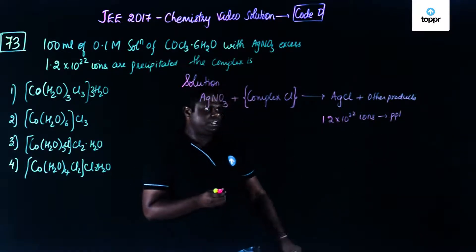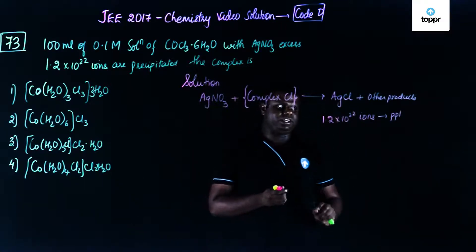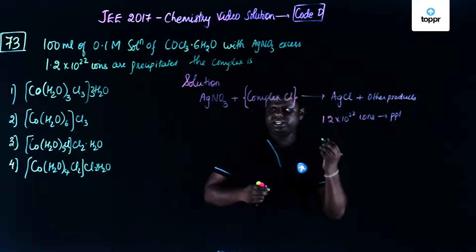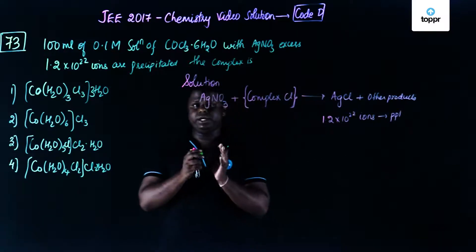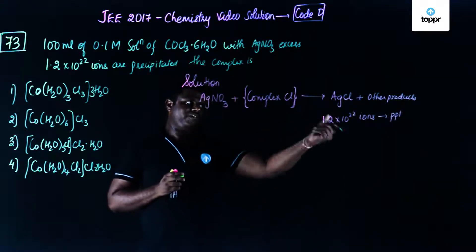So so many ions have got precipitated. You already know that AgCl contains 1 mole of Ag and 1 mole of Cl. So it's pretty much easy to understand. Let's have the correlation between the number of moles, number of ions.